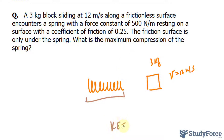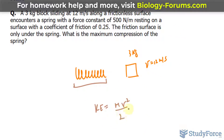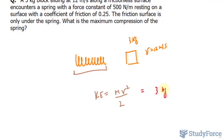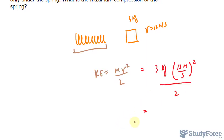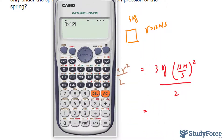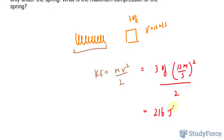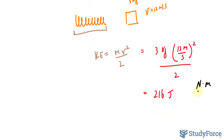Kinetic energy is calculated using the formula: mass times velocity squared over 2. So taking the mass of 3 kilograms and velocity of 12 meters per second, we have 3 times 12 squared divided by 2. That gives us 216 joules. Joules is the same as newtons times meters, and newtons can be broken down into kilograms times meters per second squared — combining all of this gives 1 joule. So this energy will go into compressing the spring.